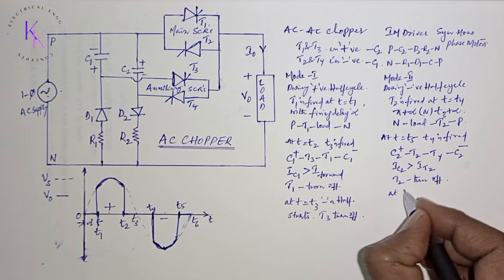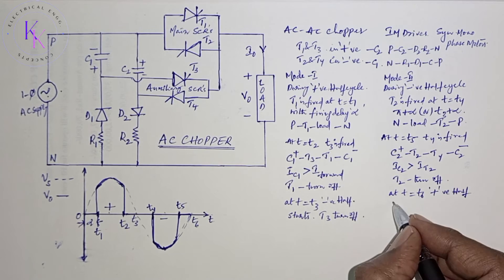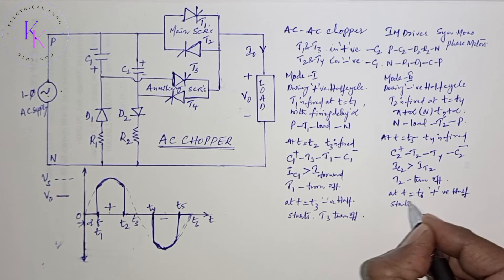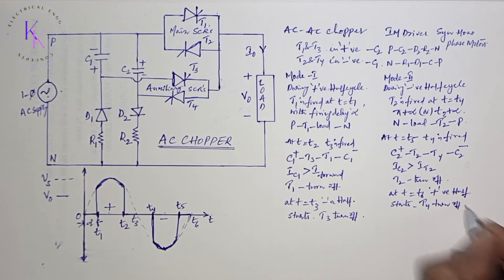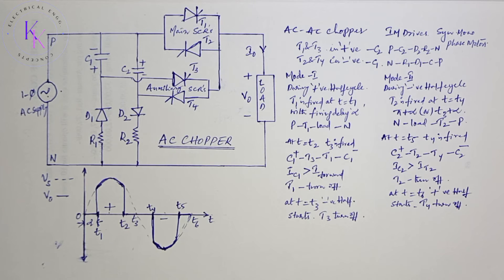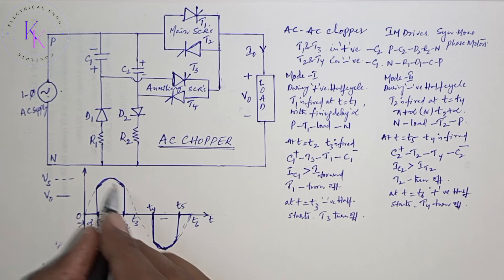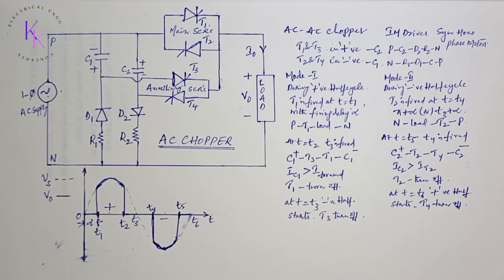At T equals to T6, the positive half cycle starts, which makes T4 turn off, and this process repeats for every cycle. You can observe the average output voltage with a solid line and the input voltage with the dotted line. The average output voltage is different than the input.